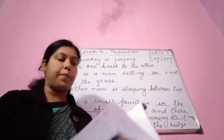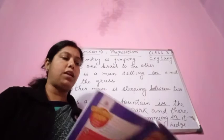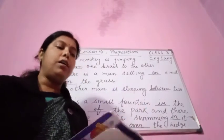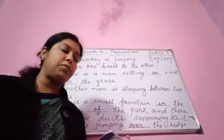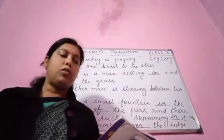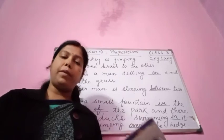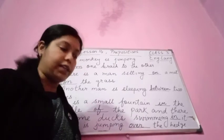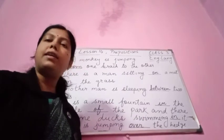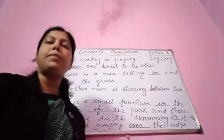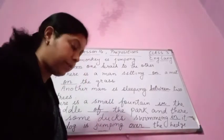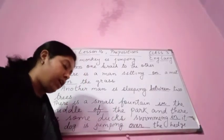Here we are talking about prepositions. Look at the picture and fill in the blanks with the words from the box. Some words may be used twice. Let us do from number 6, and then we can revise from 1 to 10.